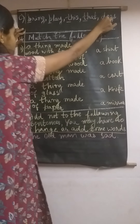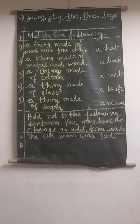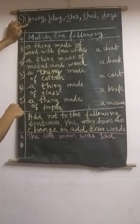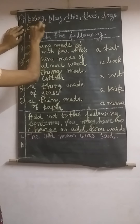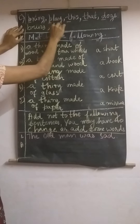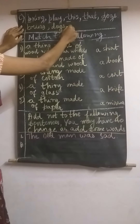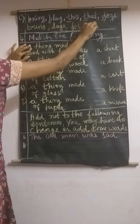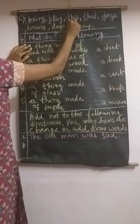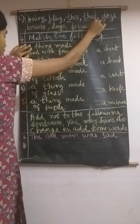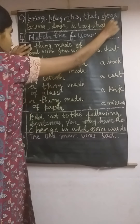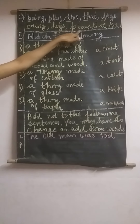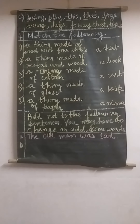Let us arrange the next set in alphabetical order. The starting letters are B, P, T, T, and D. Which can be the first arrangement? Alphabetical letter B — so write 'break.' Next is D — 'dogs.' Then P — 'play.' Now we have two T words: comparing 'that' and 'this' — P, T, H are the same; then I versus A — A comes first, so 'that' comes before 'this.' Arranged order: break, dogs, play, that, this.